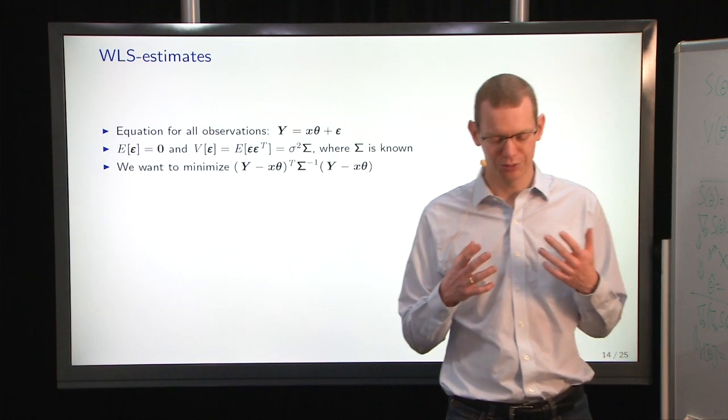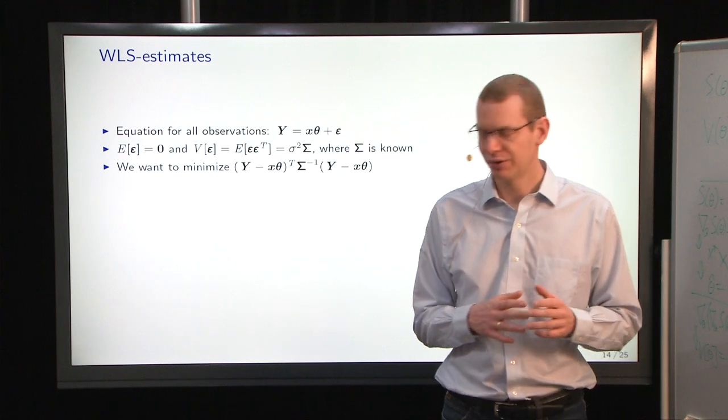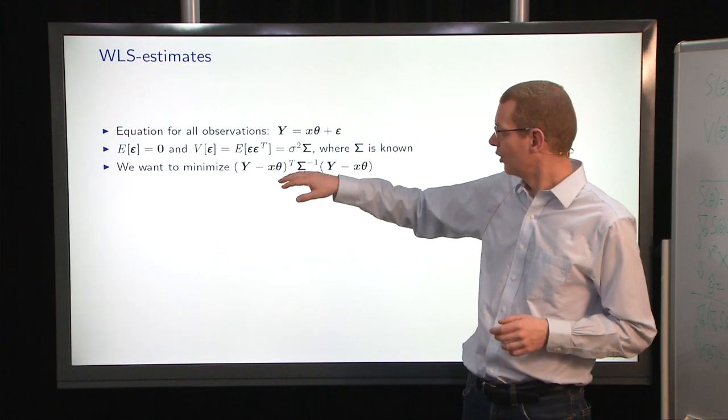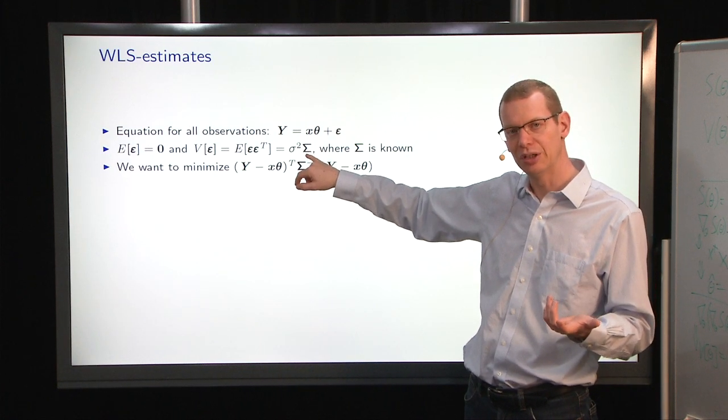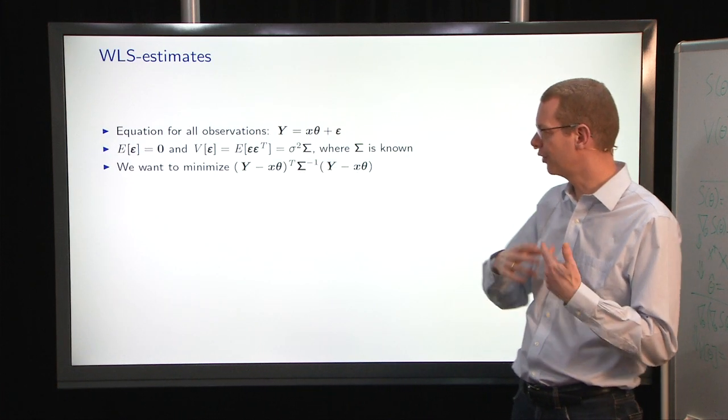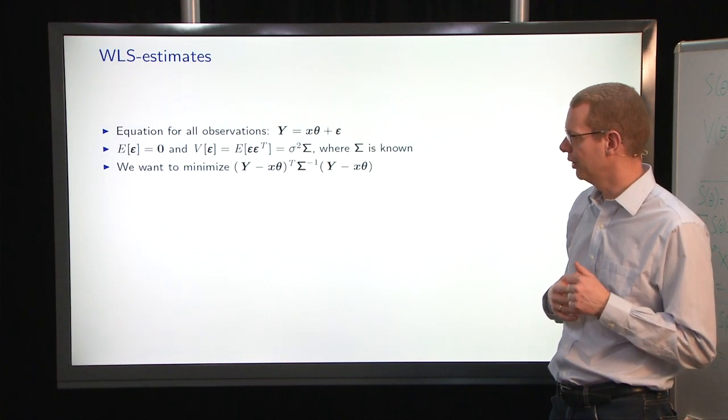So the story is, to some extent, much the same. The main difference is that we now assume a covariance structure here that is not just the identity matrix, which is the case for the ordinary least squares estimator.